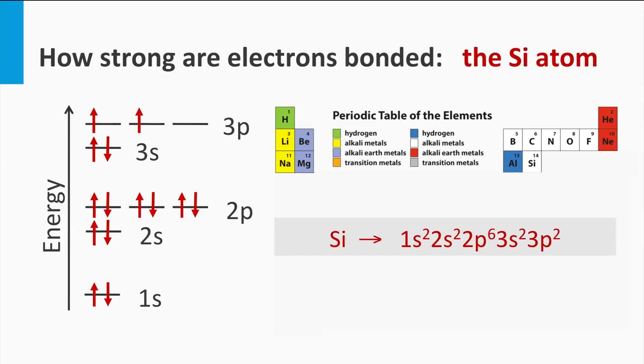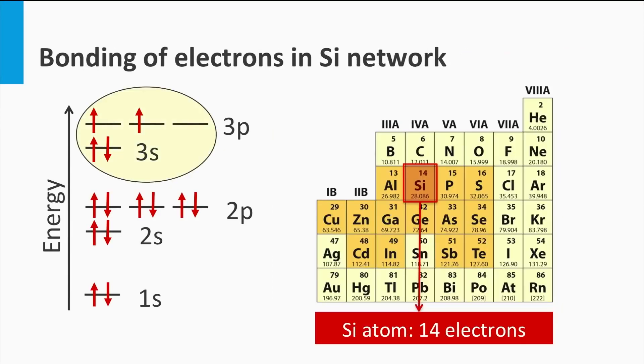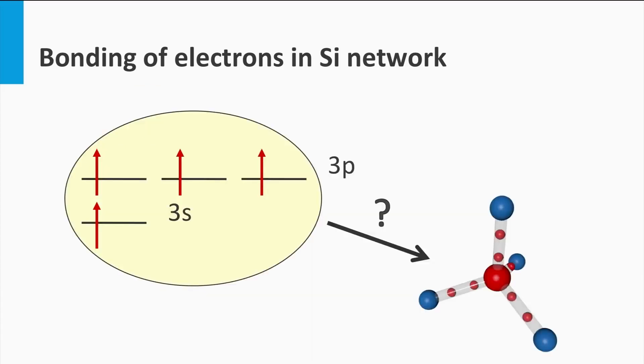Finally, we arrive at the most important element for photovoltaic applications, silicon. 90% of the commercially available solar panels is based on silicon. Silicon has 14 electrons in orbit around its nucleus and fills up to 4 electrons in the 3s and 3p states. These 4 outer atoms are the weakest bound to the nucleus.